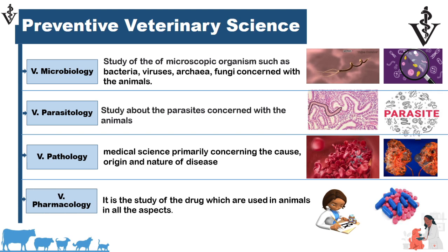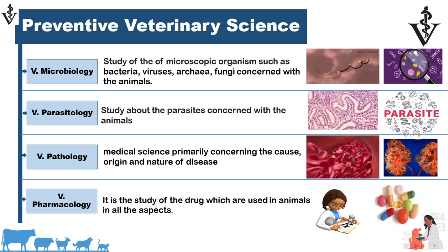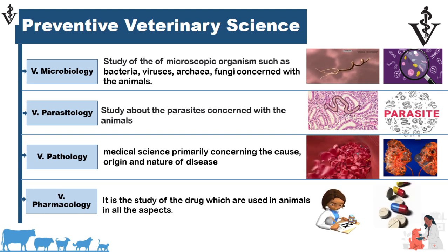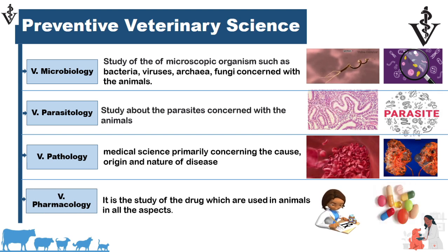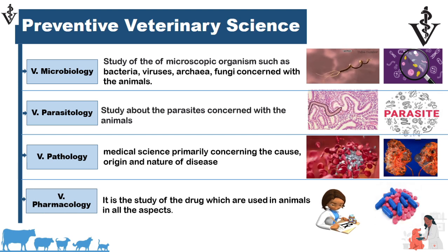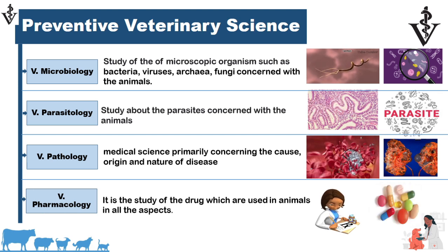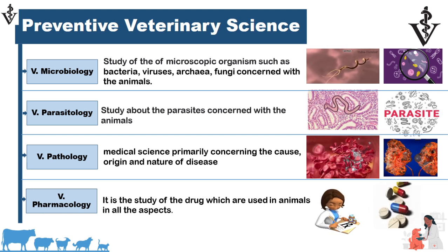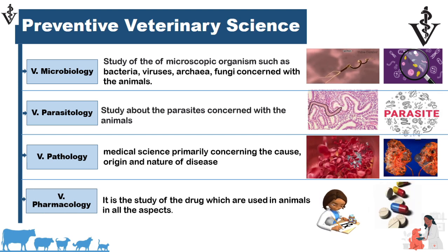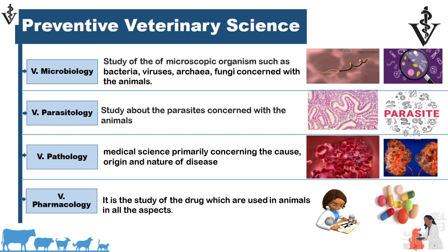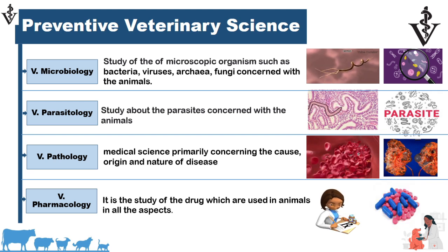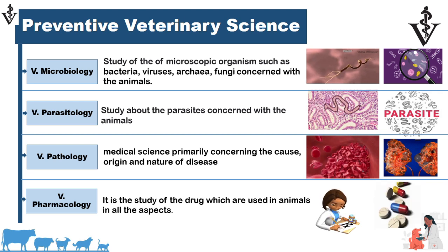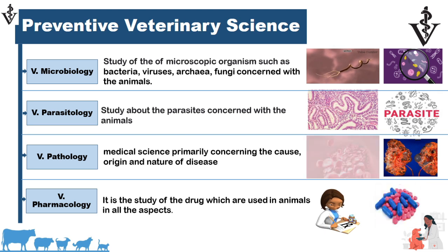Veterinary pharmacology is a science in which we study the drugs used in animals — covering all aspects, such as what types of drugs are used for different diseases in animals and how the drugs produce their actions.